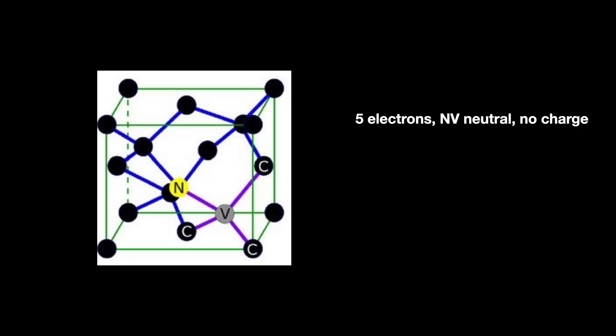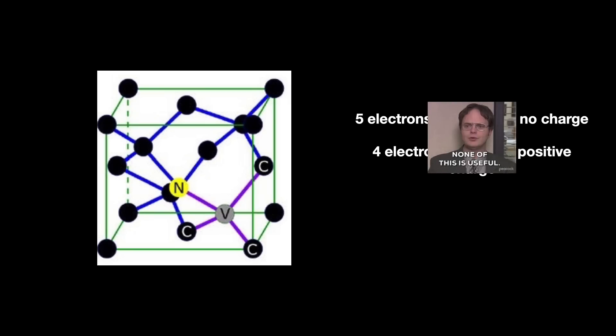There is also an NV plus center with the NV center having lost an electron, so four electrons, giving it a net positive charge. The NV neutral and NV plus energy states have been studied, and are generally not useful for our purposes today. Thus finally we get to the third state, which I shall hereby refer to as the NV negative center. Here, the NV center has captured an extra electron inside its lattice, likely from nearby nitrogen atoms. Like a pearl stuck inside a piece of coral.